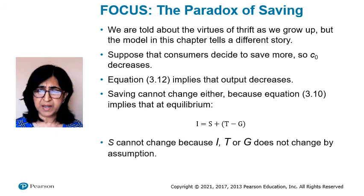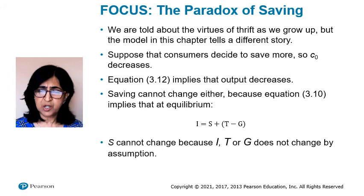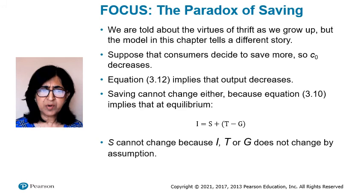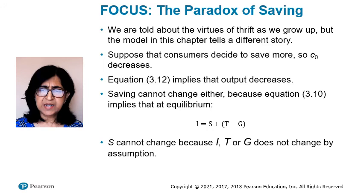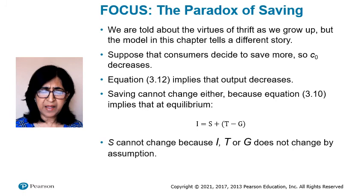Note that the same result applies to public savings — a decrease in the budget deficit would also lead to lower output and unchanged overall savings. If we extended our model to allow investment to decrease with output rather than assuming it is constant, the result would be more dramatic: an attempt to save more, by consumers or government, would lead to lower output, lower investment, and lower savings. The results of this simple model are most relevant in the short run. The desire of consumers to save more is an important factor in U.S. recessions, including during the financial crisis. In the medium and long run, an increase in the saving rate is likely to lead over time to higher savings and higher income. Warning: policies that encourage savings might be good in the medium and long run, but in the short run they can lead to a reduction in demand, output, and perhaps even a recession.